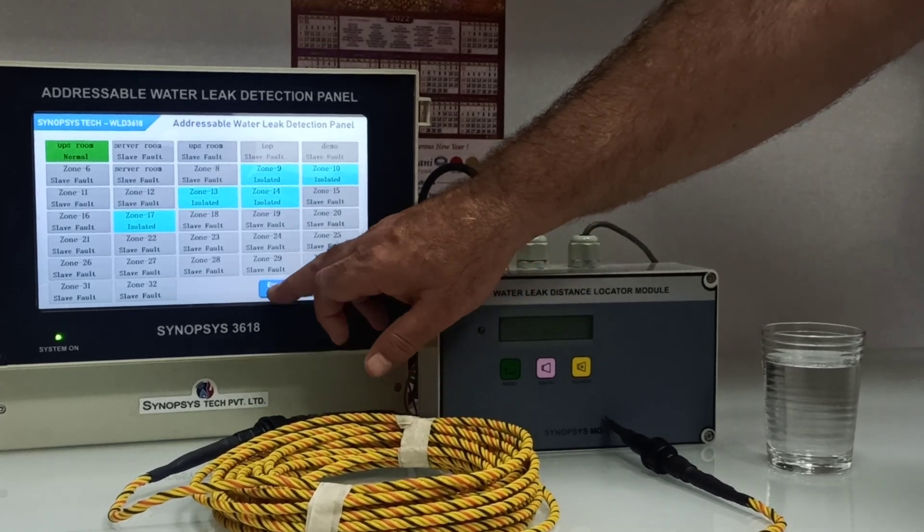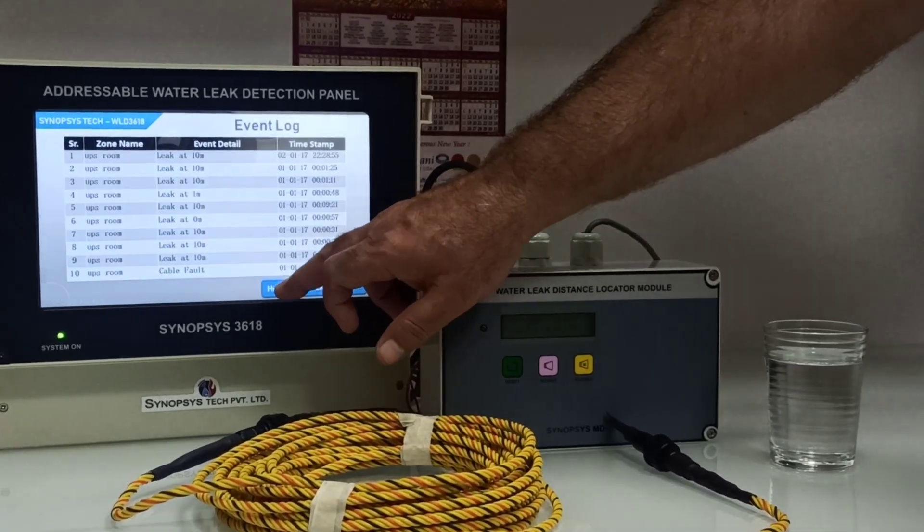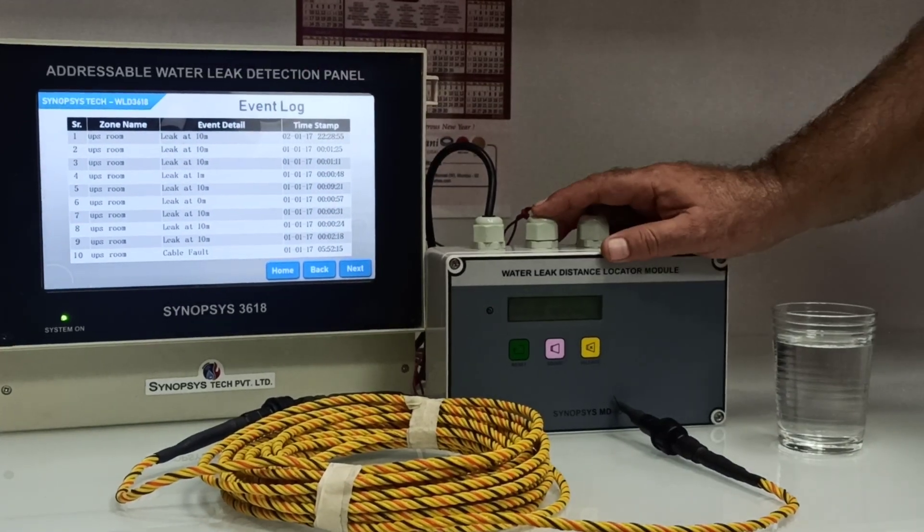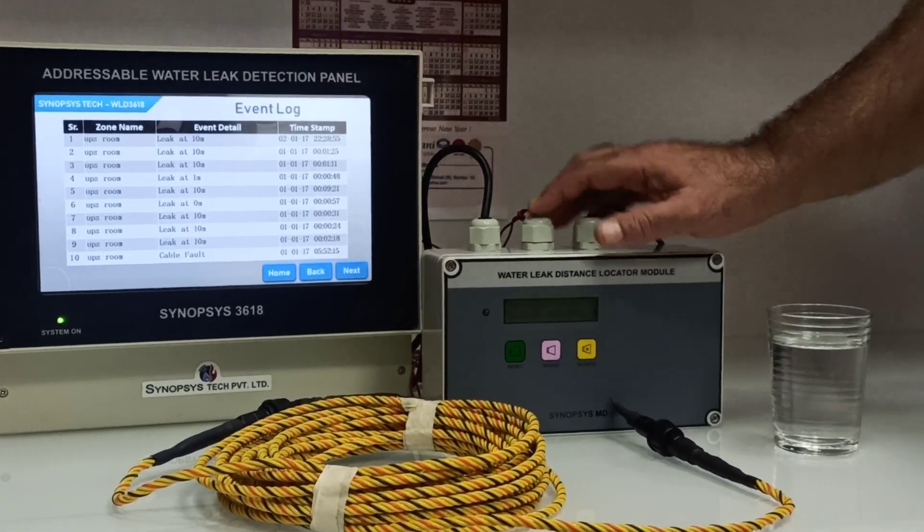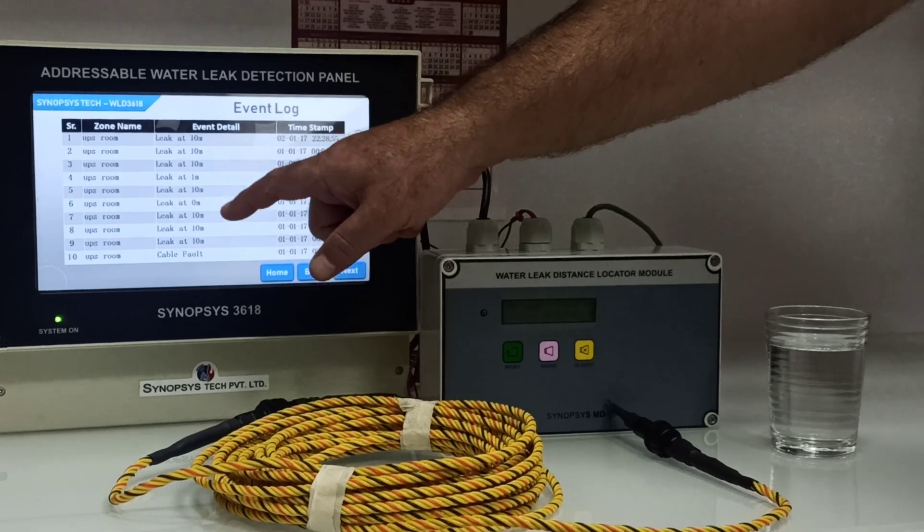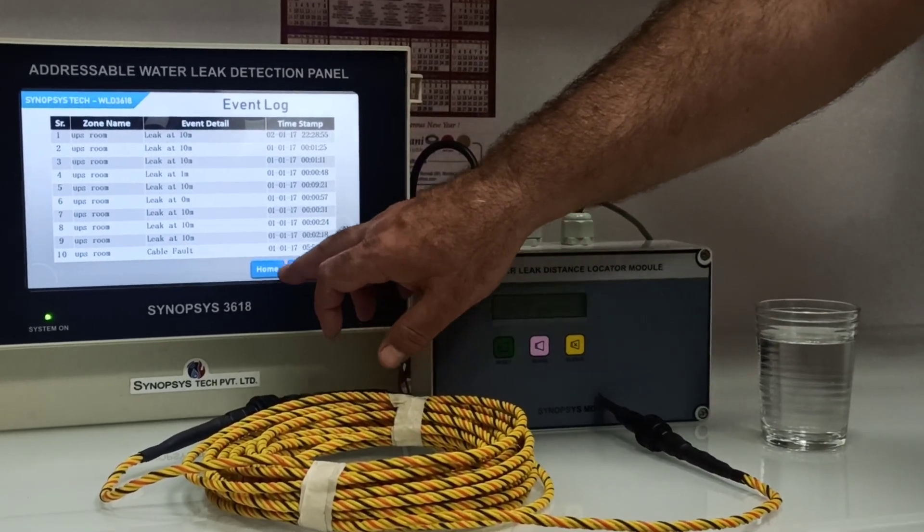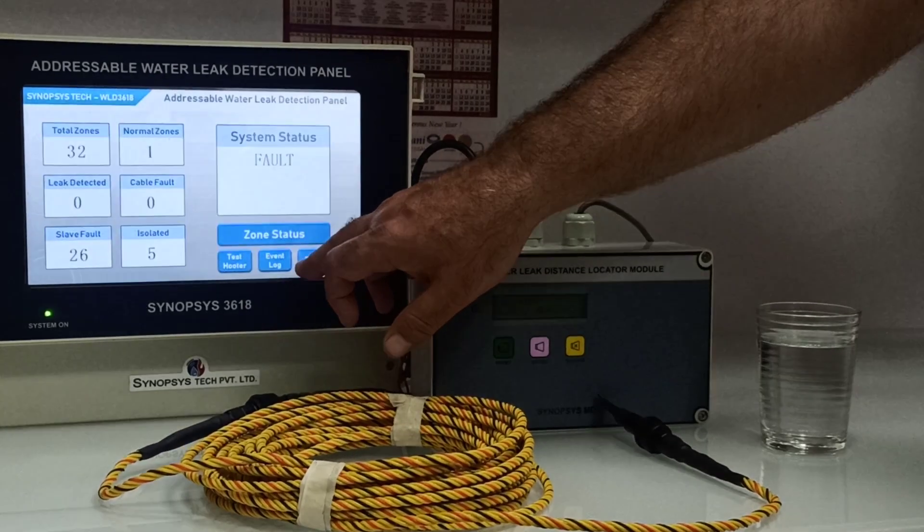Then we have event log. This event log will give you the SIM module's name, what event has occurred whether it is a leak or cable fault, the date and the time.